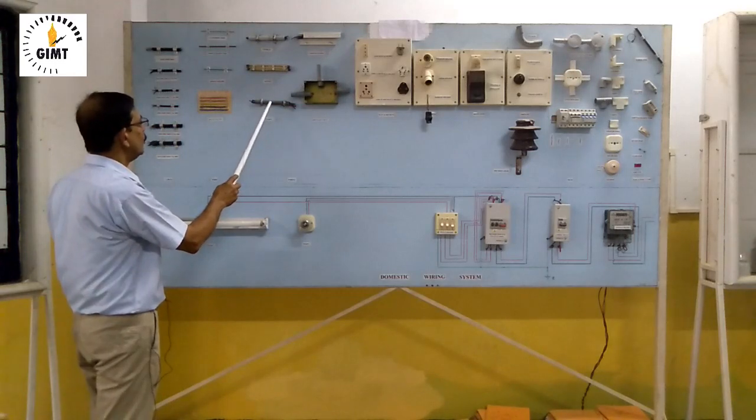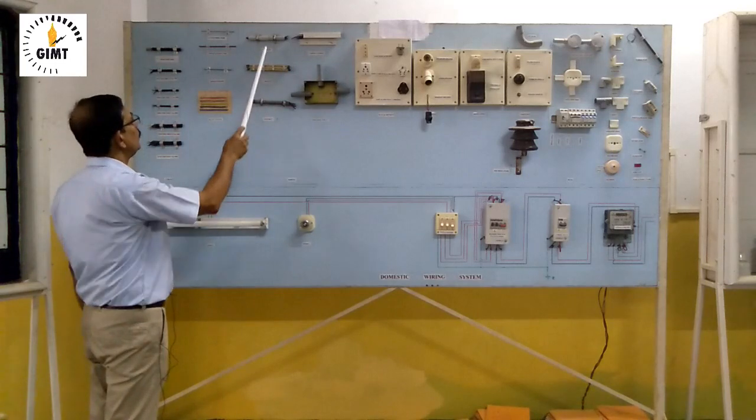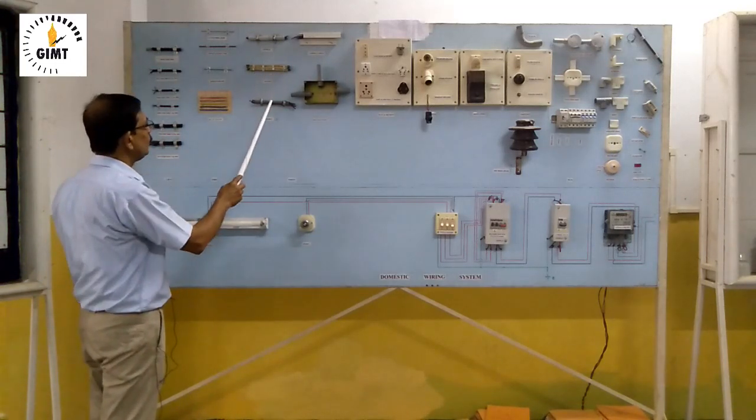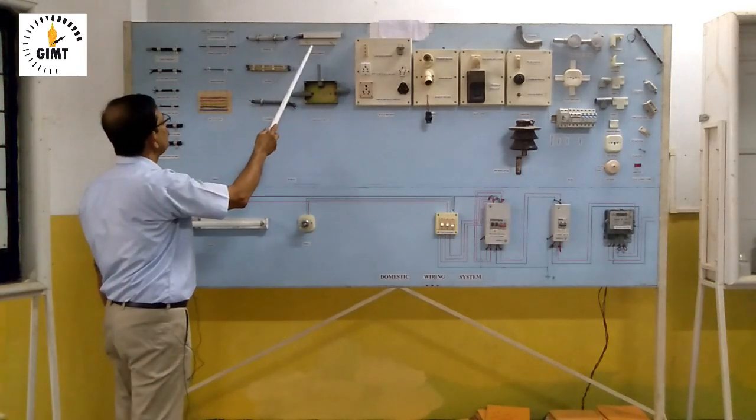And flexible wiring, where you are not able to do the correct, proper wiring with the help of these two, there we are using flexible wiring. Conduit wiring and casing capping wiring are almost similar.